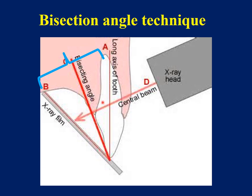This will ensure that minimum distortion of the image happens on the film. The angulation of the X-ray beam has to be 60 degrees in the upper anterior teeth, 45 degrees in the upper premolar teeth, and 30 degrees in the upper molar teeth. For the lower teeth, it is either 0 or minus 10 degrees.